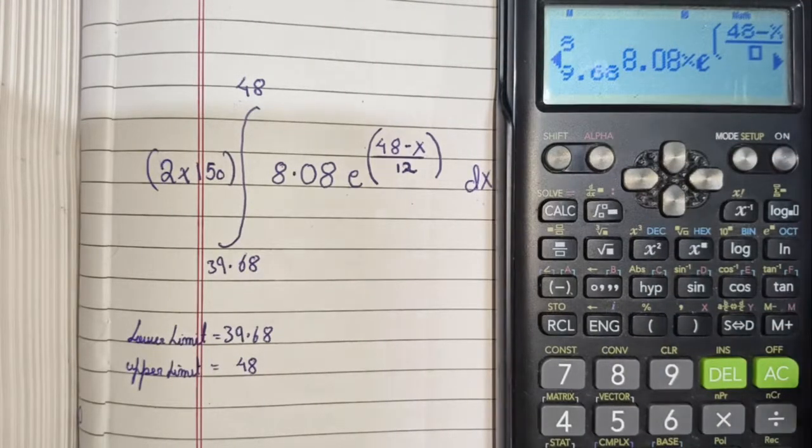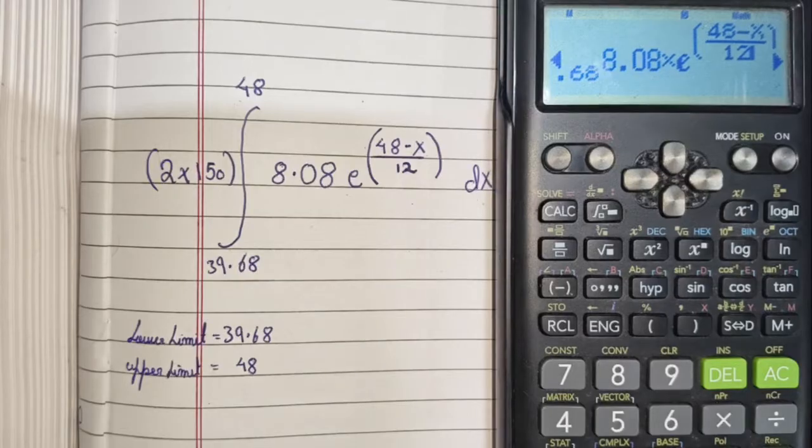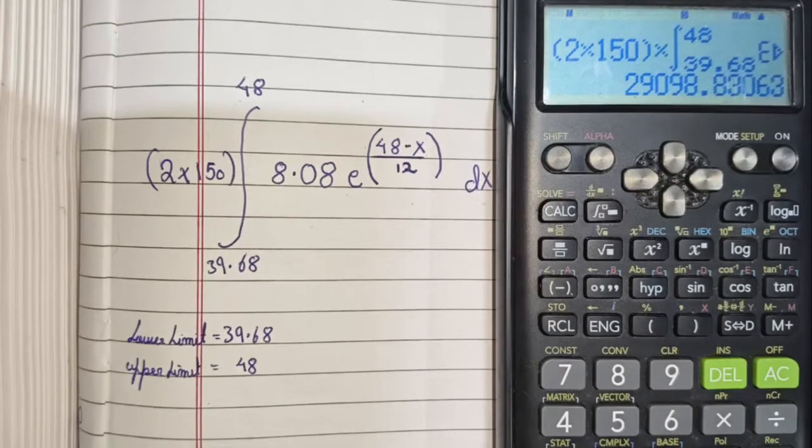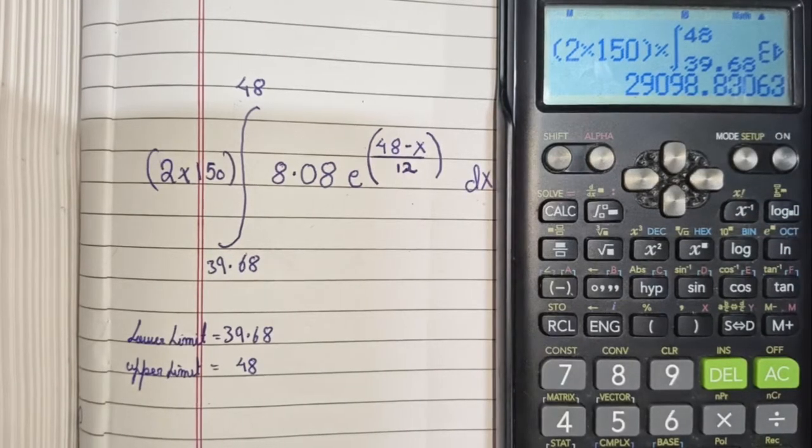Now switch below, and write 12. Now, all you need to do is press equal to, and it will display your results. And here, we got 29098.83, which is the correct result.